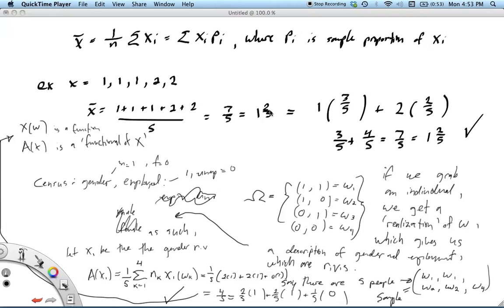Or equivalently, we could have noted that there were 3 ones out of 5, so we take that proportion times the actual value, and we would add to that the proportion of 2s, which was 2 fifths, times that value, which is 2, and we get the same thing.